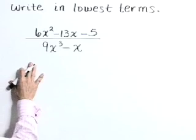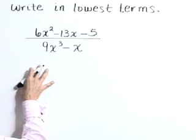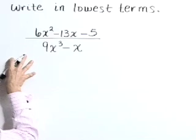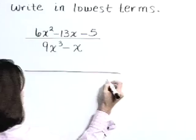To write this in lowest terms, we need to cancel out any common factors. You can't cancel at this point because neither the numerator or denominator is in factored form. So let's factor both the numerator and denominator.